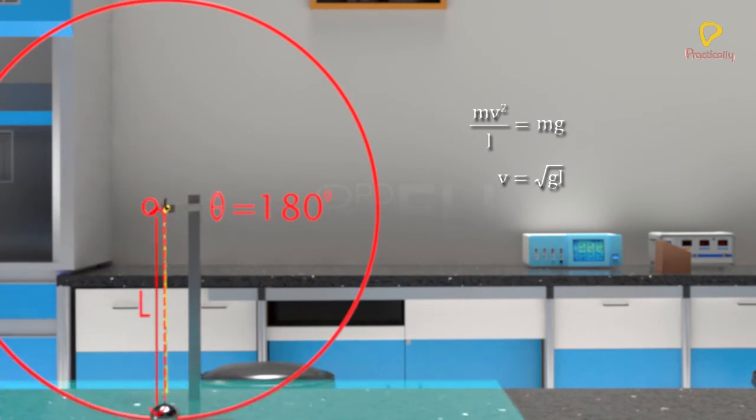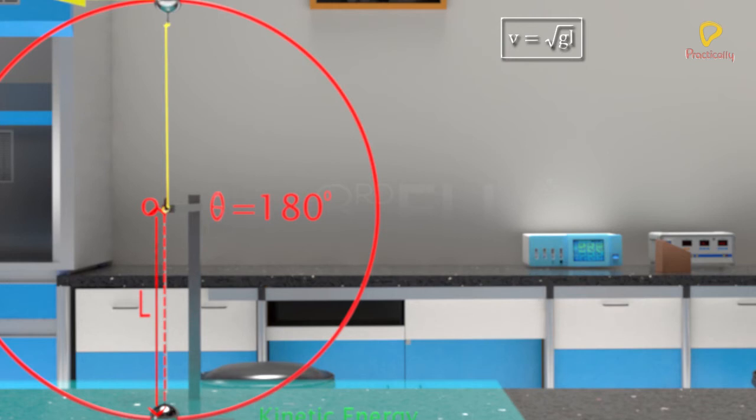If we take the horizontal plane at the lowest point A as reference, the bob has only kinetic energy at A. At the highest point, the bob has kinetic as well as potential energy.